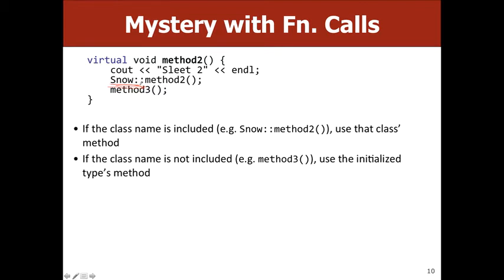A student asks: do you still follow virtual statements when you call method2 with a class prefix like snow::method2? In that case you always execute snow's method2 — it doesn't matter if it's virtual or not. But if you call method3 without a prefix, you always call the initialized type's method3, whatever's on the right side of the equal sign. Since we only deal with virtual inheritance in this class, you don't have to worry about non-virtual behavior.